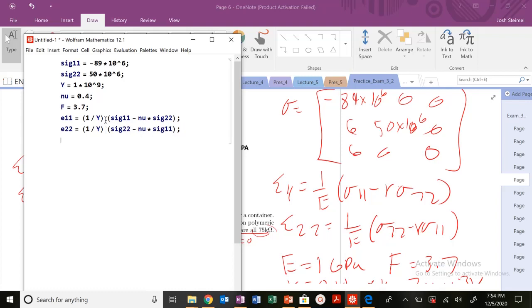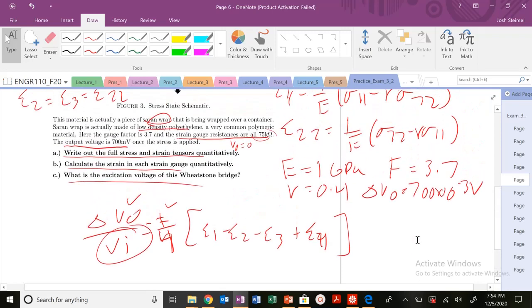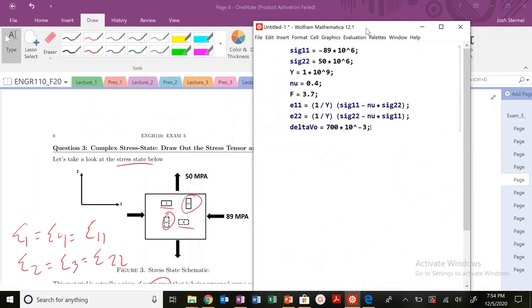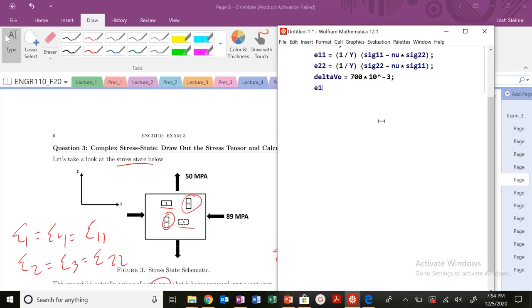So what else do we know here in this problem? Let's go ahead and write delta V-naught. Delta V-naught is equal to 700 millivolts, so 700 times 10 to the minus 3. I know that my E1 is equal to E11. My E4 is equal to E1. My E2 is equal to E22. And my E3 is equal to E2. There we go. So let's go ahead and calculate those values.